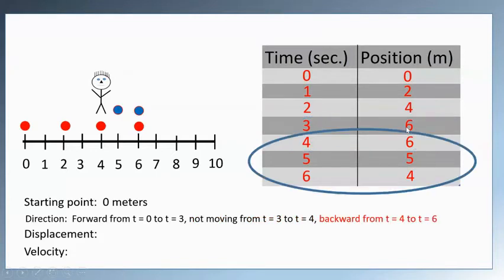All right, and then after that, from four to six seconds, you see these numbers getting smaller. That means he was moving backwards. Okay, so usually with one-dimensional motion like this, we'll say that moving forward was, forward would be when the numbers getting greater, backwards is when the numbers are getting smaller.